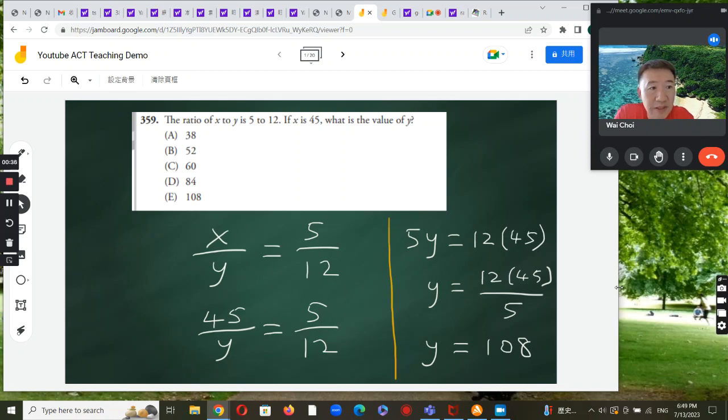So we need to set up an equation. The equation is going to be x over y. We can express a ratio as a fraction. The fraction is going to be 5 over 12.